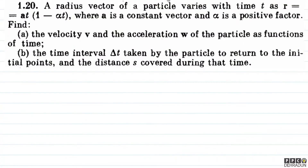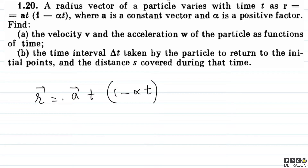So let's try to analyze what has been given to us. The position vector has been given to us as a vector multiplied by t times (1 minus alpha t). So basically this position vector is given. Now, a vector is a constant vector.